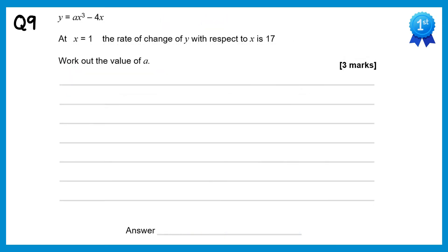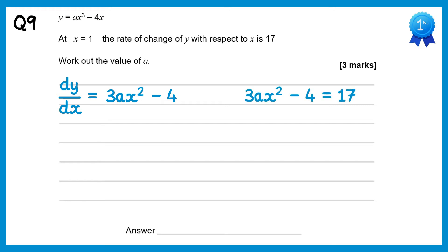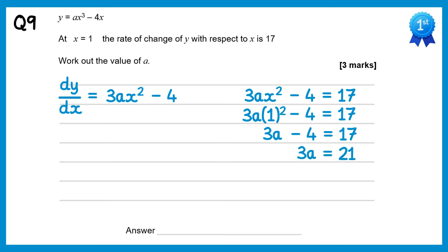For this question we'll find dy/dx. When you have ax cubed the a is just a constant, so differentiating gives 3ax squared. Differentiating negative 4x gives negative 4. We're told the rate of change of y with respect to x is equal to 17, so 3ax squared minus 4 equals 17, at x equals 1. Substituting: 3a times 1 squared take away 4 equals 17, so 3a take 4 equals 17. Adding 4 gives 3a equals 21, and dividing by 3 gives a equals 7.